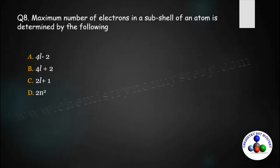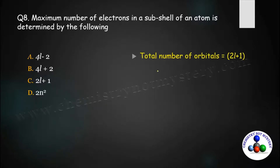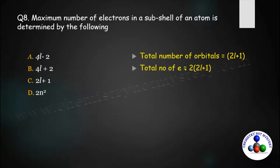Next question: the maximum number of electrons in a subshell is determined by which formula? The total number of orbitals is always 2l plus 1, and each orbital can hold a maximum of 2 electrons. Multiplying by 2 gives 4l plus 2 electrons. So option B is the right answer.